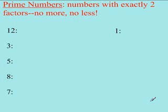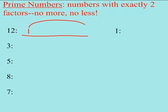We're going to look at this list of numbers and see which ones are prime. To do that, I'm going to use a factor rainbow. So, factors of 12. I get 1 times 12 is 12.